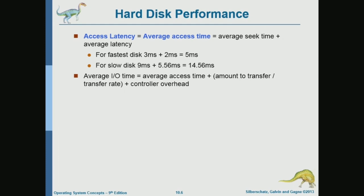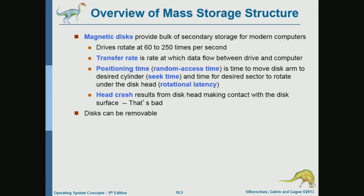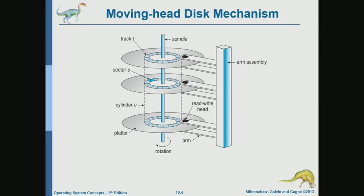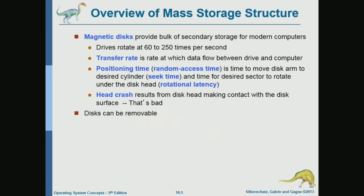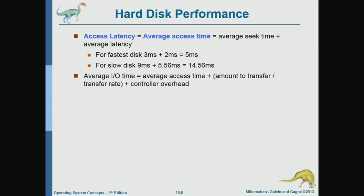There are two kinds of motion: the linear motion of the head and the rotational motion of the track, and both are slow, in the millisecond range. The head motion — called seek time — is typically around three milliseconds, and for rotational motion, around two milliseconds for a fast disk. When we talk milliseconds, that's millions of CPU cycles, so this is very slow — six orders of magnitude slower than the CPU and four orders of magnitude slower than main memory.